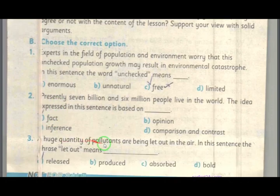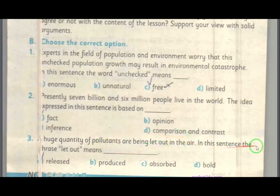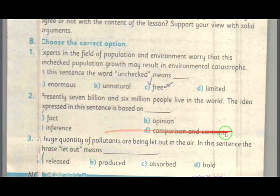Next activity — choose the correct option. We experts in the field of population and environment worry that this unchecked population growth may result in environmental catastrophe. In this sentence, the word 'unchecked' means unnatural, unlimited, free of limit — beyond control. A huge quantity of pollutants are being let out — in this sentence, the phrase 'let out' means release.